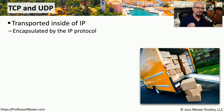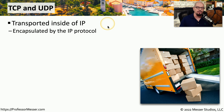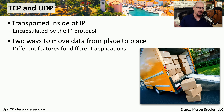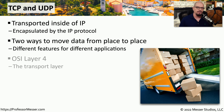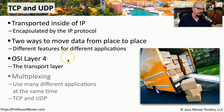Let's drill down into this IP packet at the TCP protocol and the UDP protocol. TCP and UDP are transported inside of that IP packet — we commonly say that they are encapsulated within IP. They are two very common ways to move data from one part of the network to the other. You might also hear someone refer to TCP or UDP as operating at the transport layer of the OSI model, sometimes referred to as OSI layer 4.